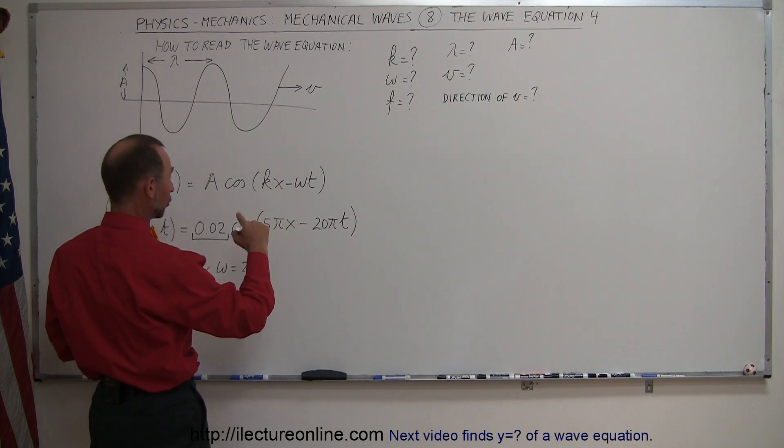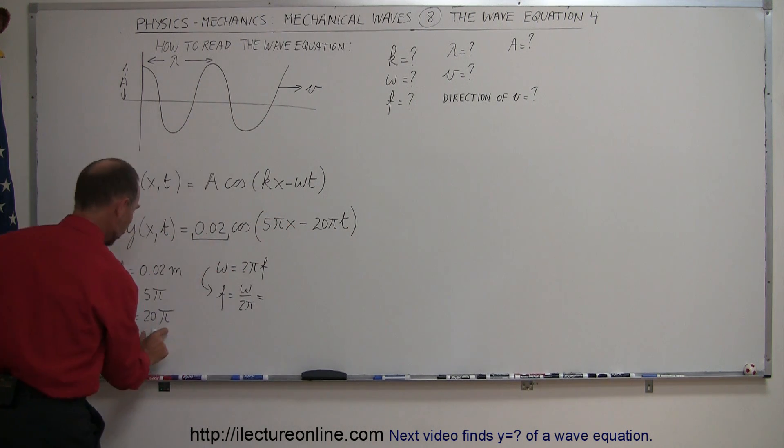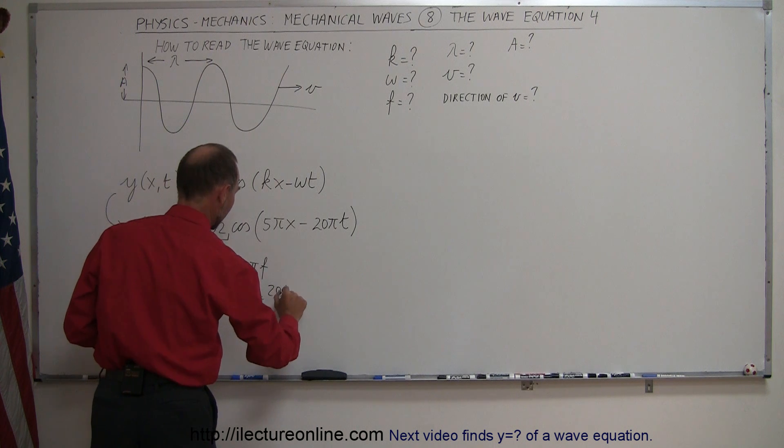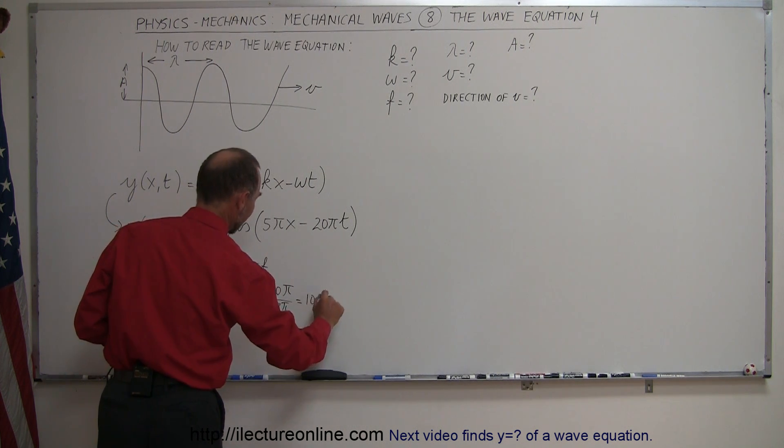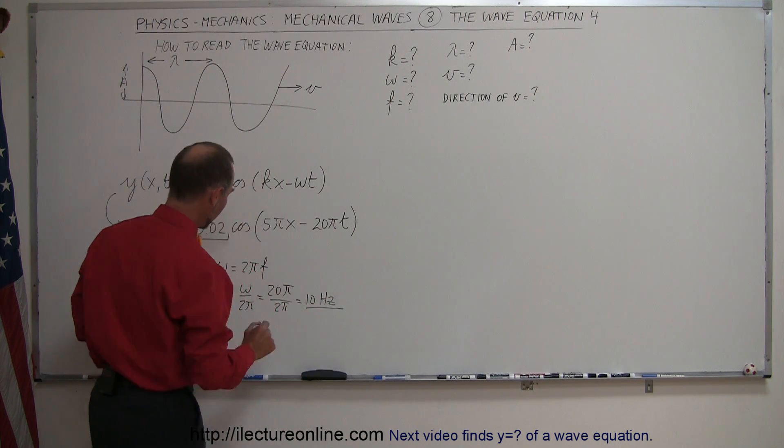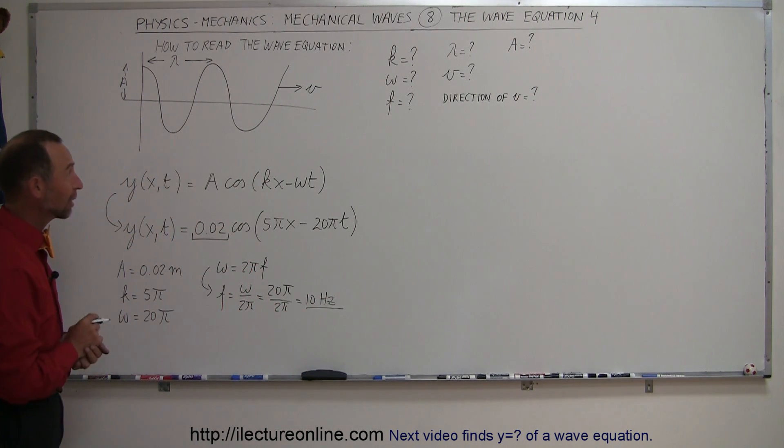And since omega is equal to, right here, this is the 20 pi, so 20 pi divided by 2 pi, which is equal to 10, and the units would have to be hertz. All right, so now we found the frequency of this wave.